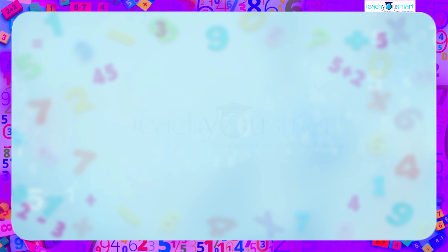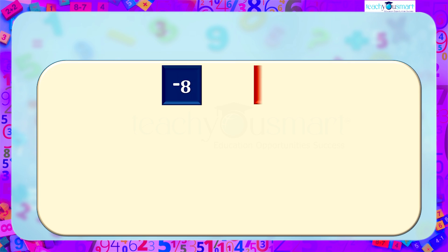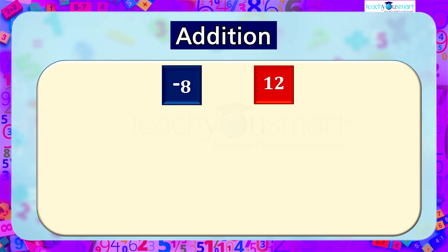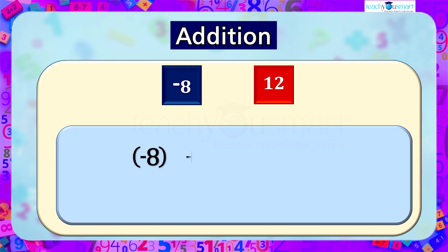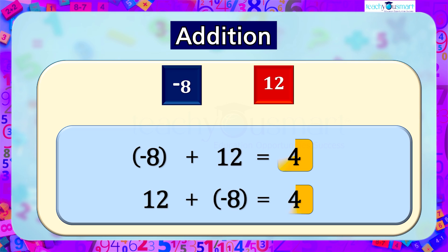Consider two integers: minus 8 and 12. We will start with addition. Adding minus 8 and 12, we get minus 8 plus 12 is equal to 4, and 12 plus minus 8 is equal to 4. We can see the sum is the same irrespective of the order. Changing the order of numbers does not affect the result.